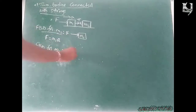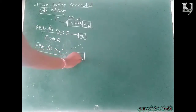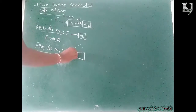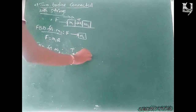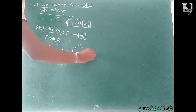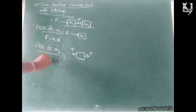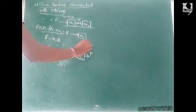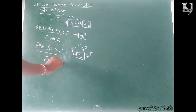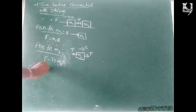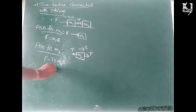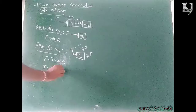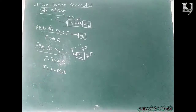Free body diagram for M2: it is the tension force and it is exactly opposite to the applied force. So, F minus tension force T is equal to M2 into acceleration A. Rearranging: T is equal to F minus M2·A.